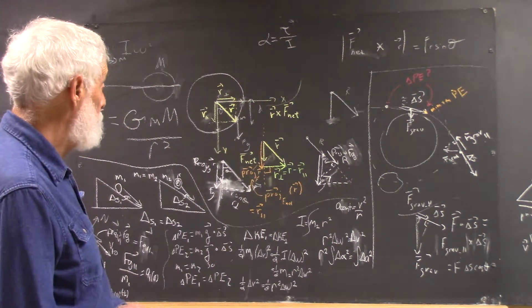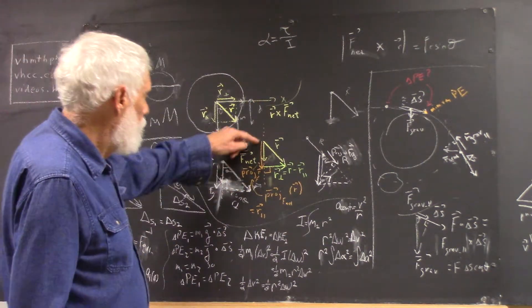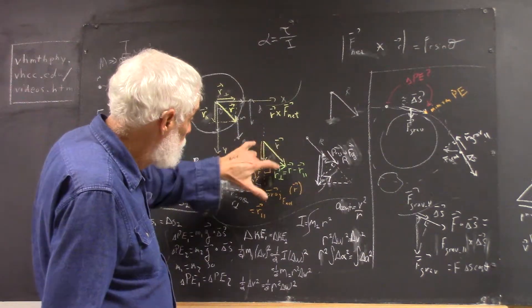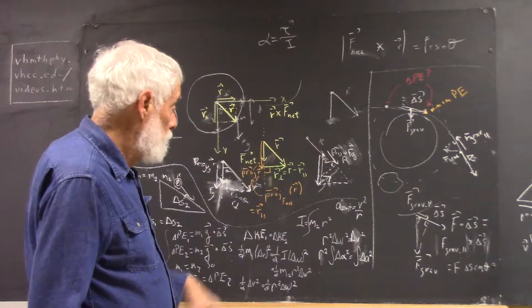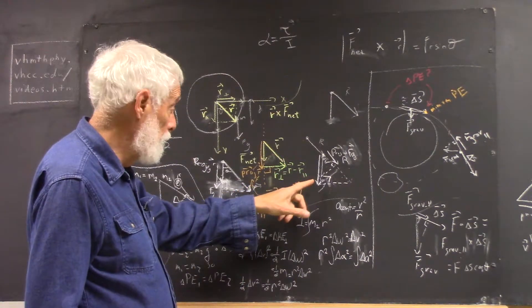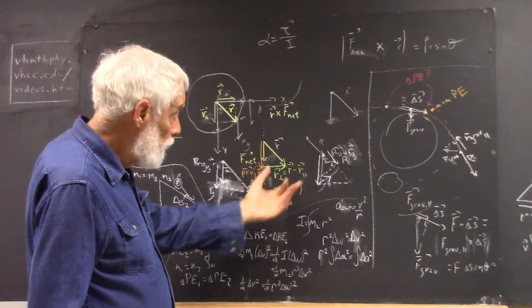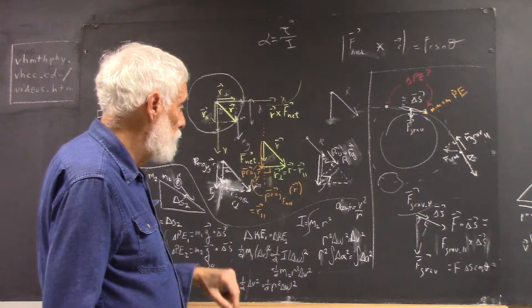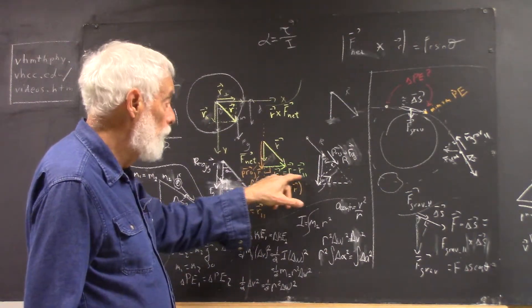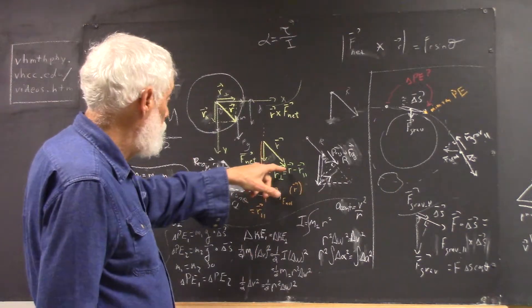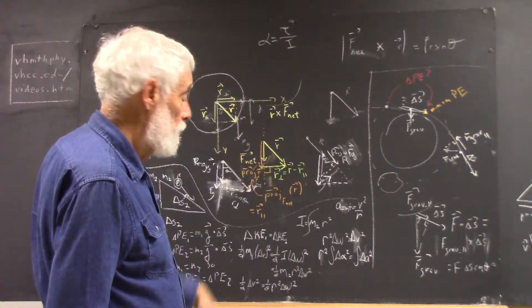And that's going to equal r minus r parallel. And why should that be equal? It's because your r parallel, which is this projection here, plus this r perpendicular is equal to r. Well, to say that r perpendicular is r minus r parallel is the same thing as saying that r perpendicular plus r parallel equals r. So here's our r parallel, not r perpendicular in terms of r and r parallel, r parallel being this projection vector of r onto f-net.